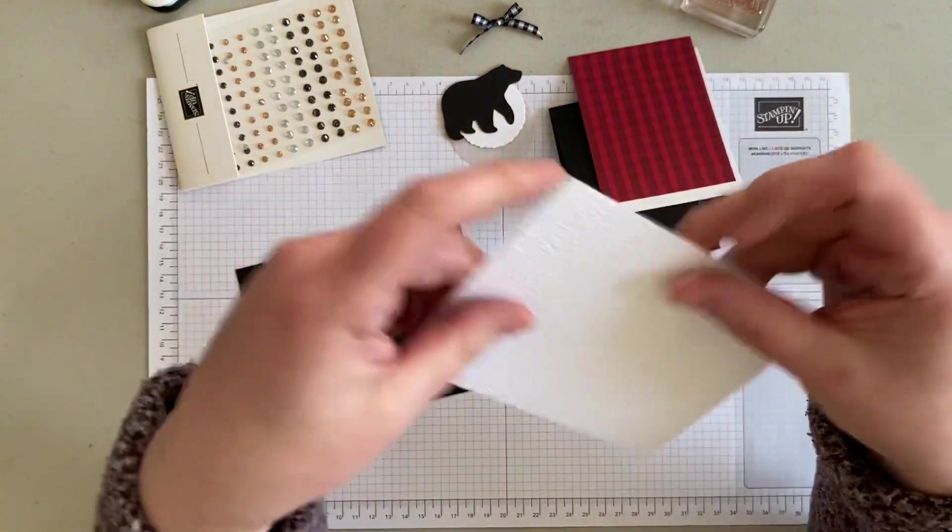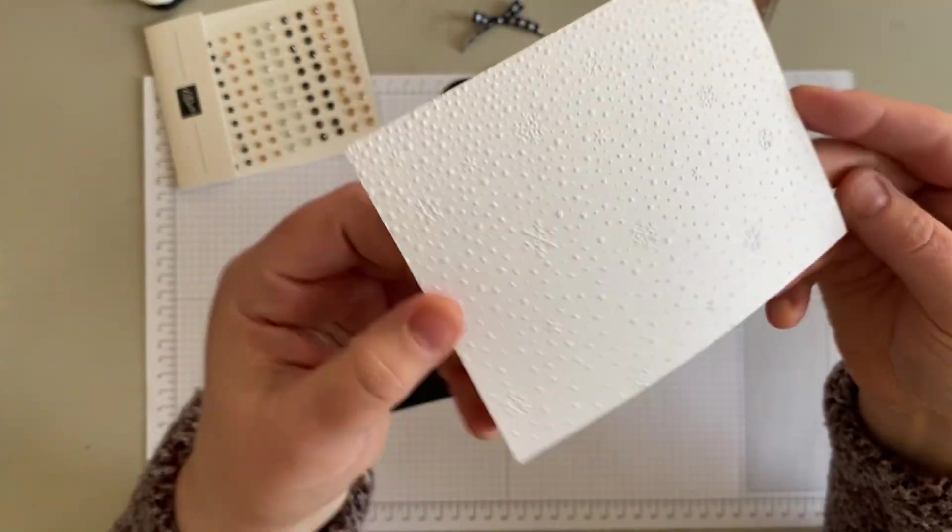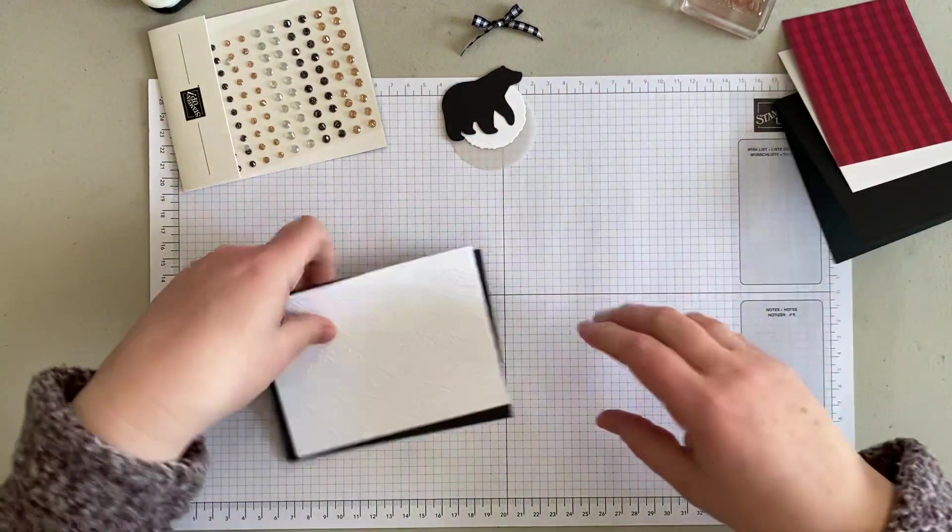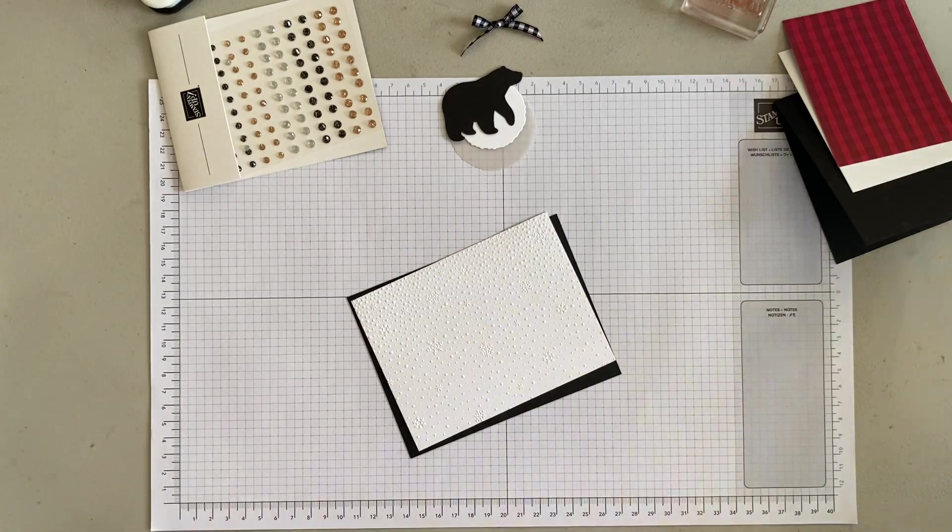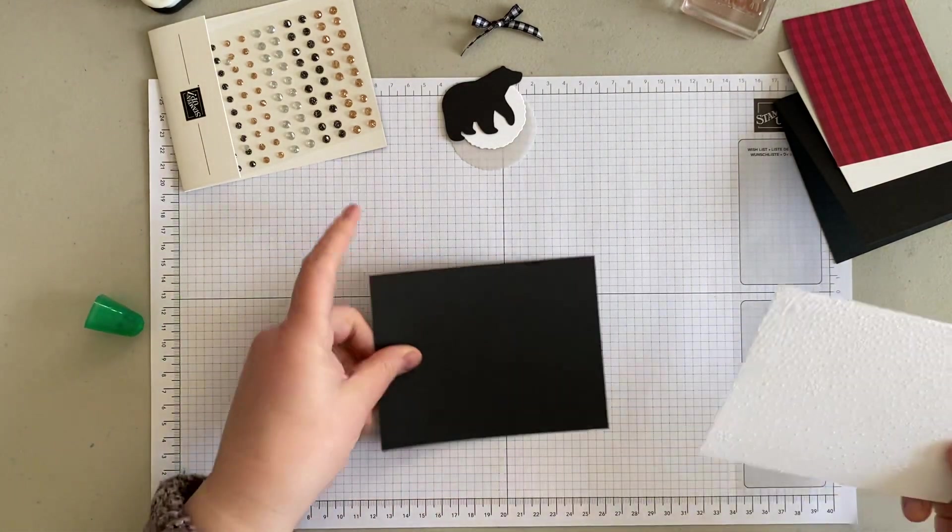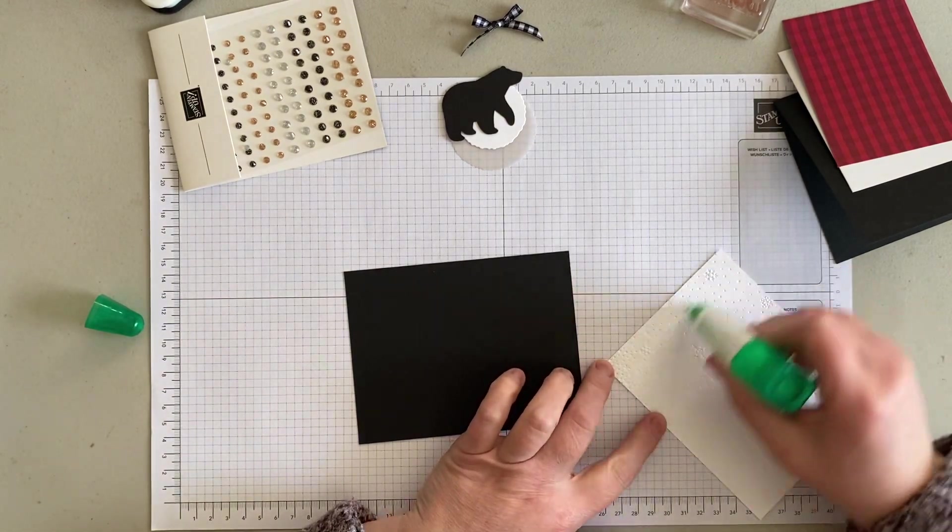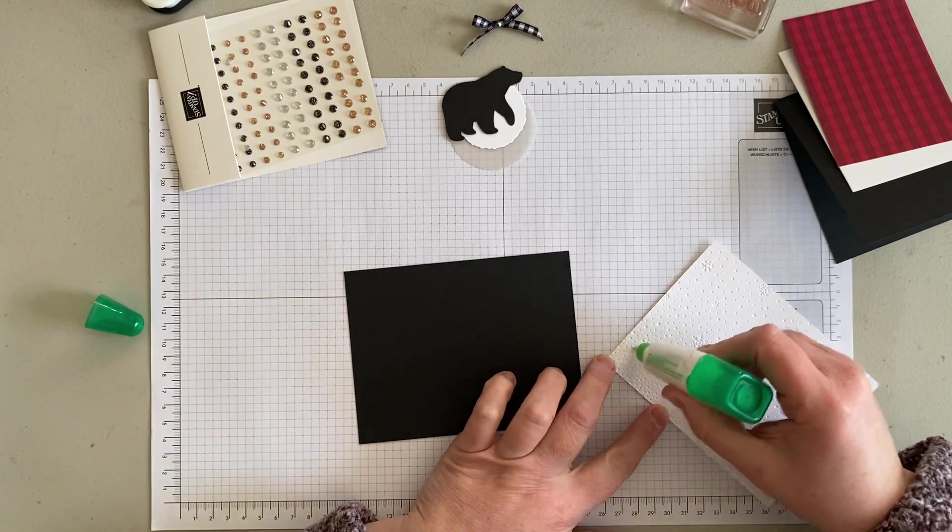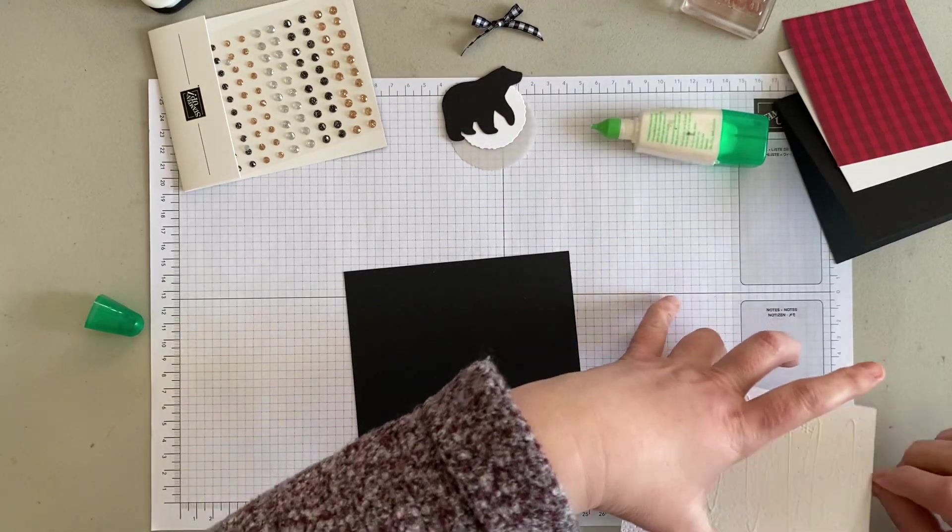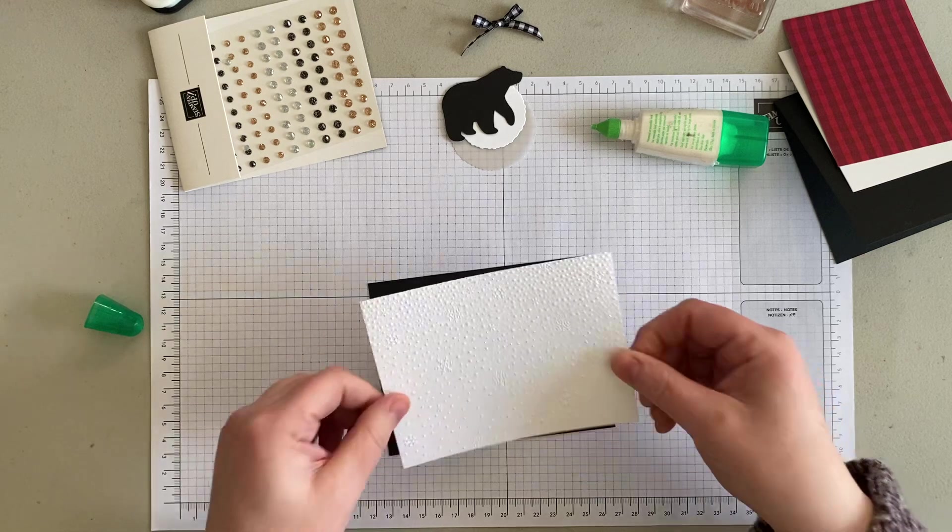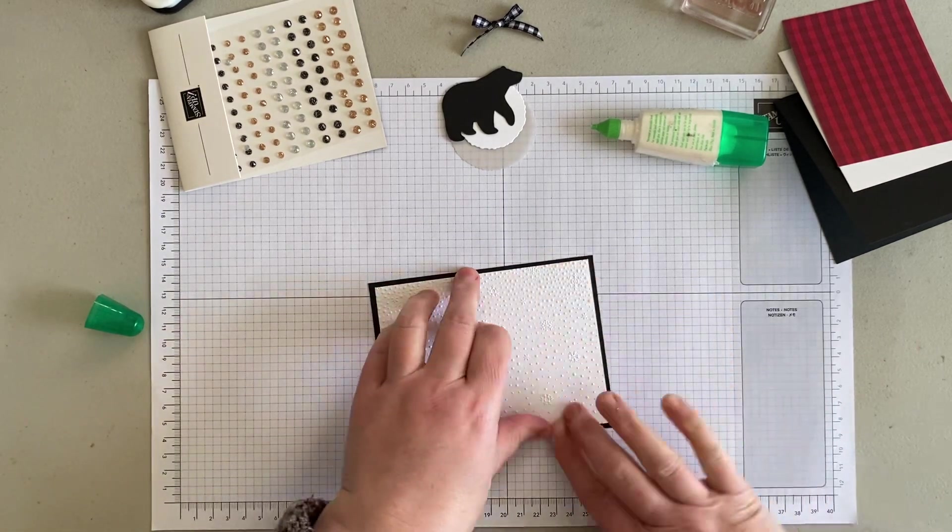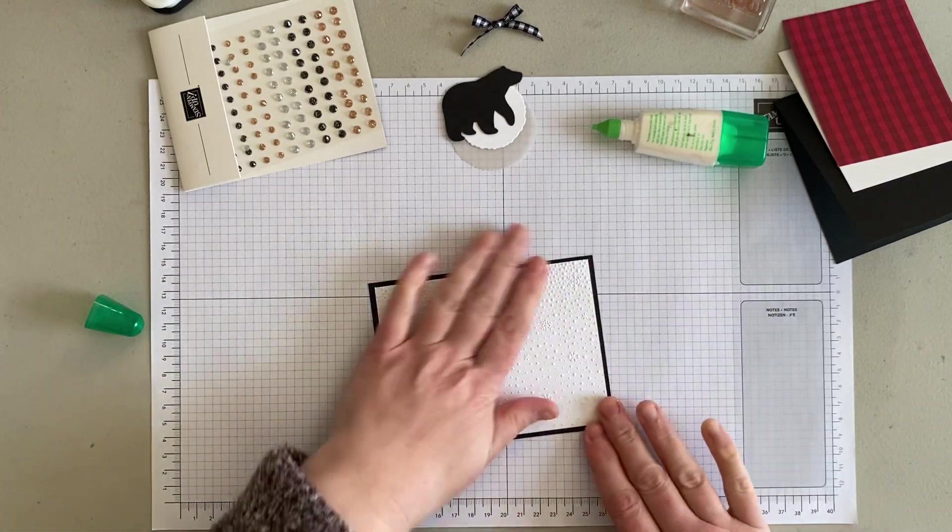I've gone ahead and embossed the basic white mat with the snowflake embossing folder. The first thing we're going to do is adhere that to the base, which is just like a postcard, so it's not going to open up. I love the texture that gives.